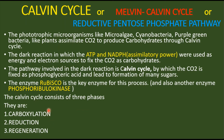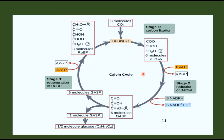To understand the Calvin cycle easily, it can be divided into three phases: the carboxylation phase, the reduction phase, and the regeneration phase. In the carboxylation phase, carbon fixation occurs — that is why we call it the carboxylation phase.